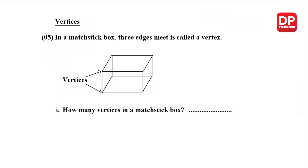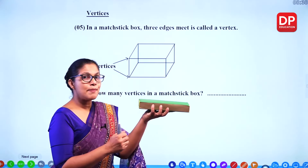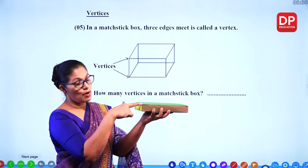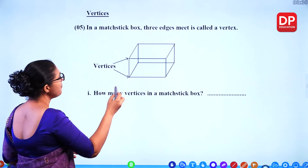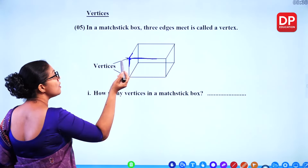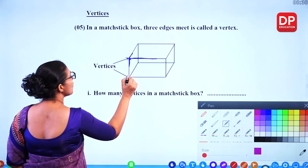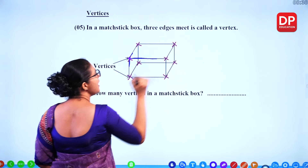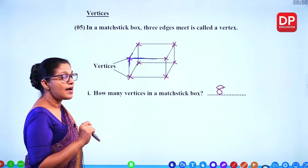Now we'll look at what vertices are. In a matchstick box, three edges meet at a point — we call that point a vertex. The plural is vertices. Counting the vertices of a matchstick box: 1, 2, 3, 4, 5, 6, 7, 8 — there are eight vertices.